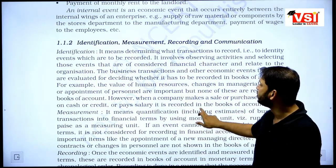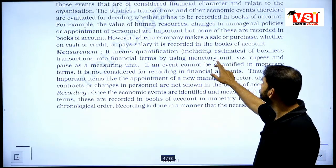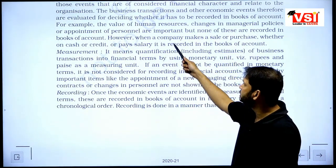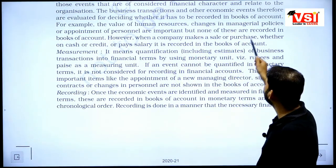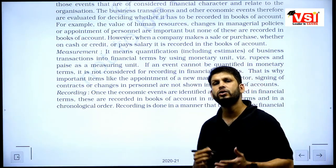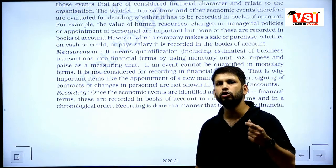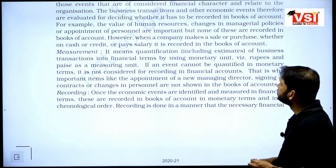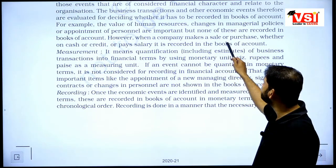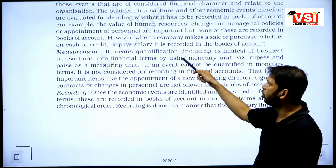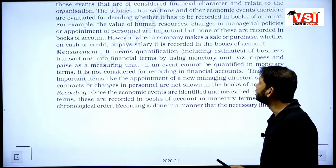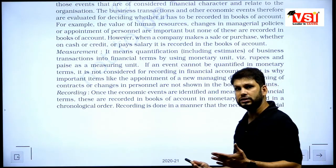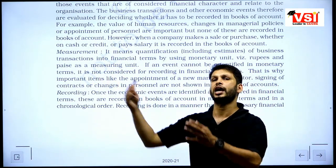For example, the value of human resources, changes in managerial policies, or appointment of personnel are important but none of these are recorded in books of accounts, because these are qualitative things, not quantitative. However, when a company makes a sale or purchase — whether on cash or credit — or pays salary, it is recorded in the books of accounts because money is either changing hands or will change hands in the future.